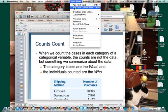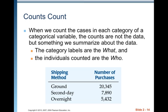Welcome back. We are going to talk about the fact that counts count. When we count the cases in each category of a categorical variable, the counts are not the data, but something we summarize about the data. The category labels are the what, and the individuals counted are the who. And the actual counts are a summary.